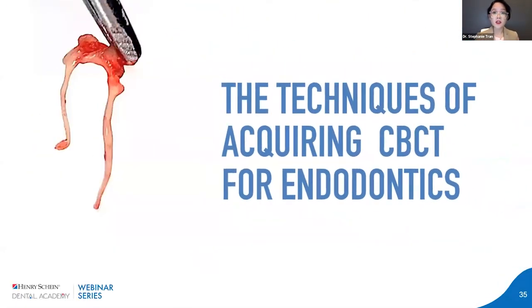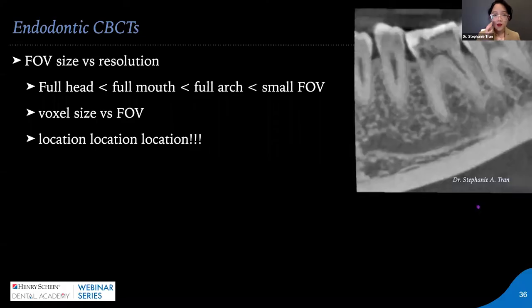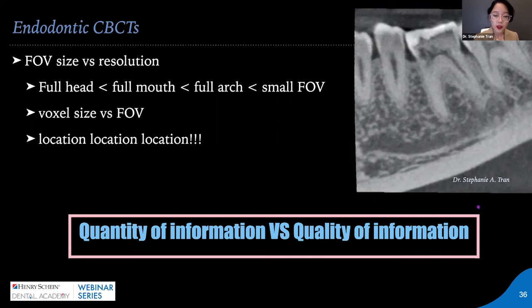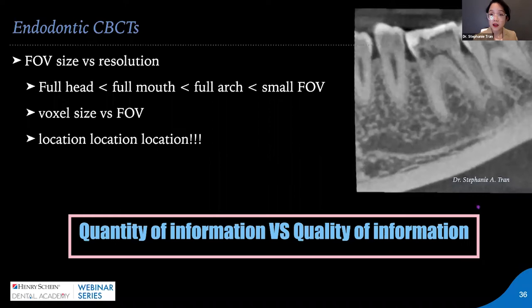When it comes to CBCT, this gives an even better, closer-up view of the anatomy. For CBCT in endodontics, especially when evaluating curvature, it must be the lowest field of view possible because we want the highest quality information. The smaller the field of view, the higher the resolution. A small field of view also means the least interference from surrounding anatomy, smallest voxel sizes, and thinnest slices — all providing higher resolution.